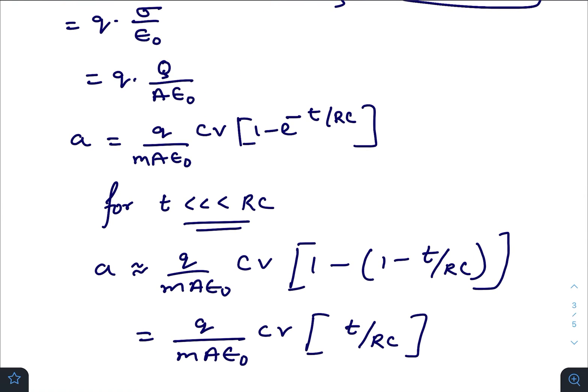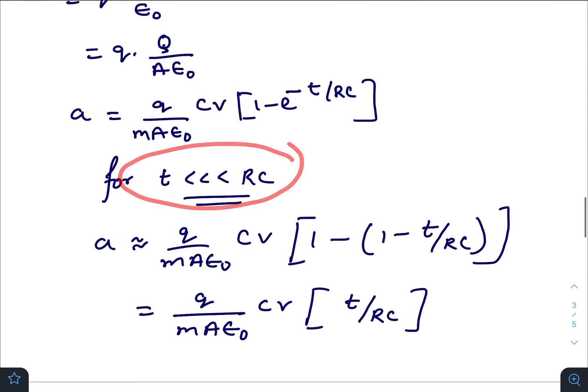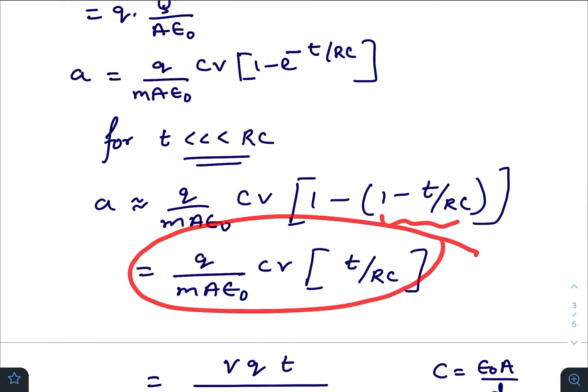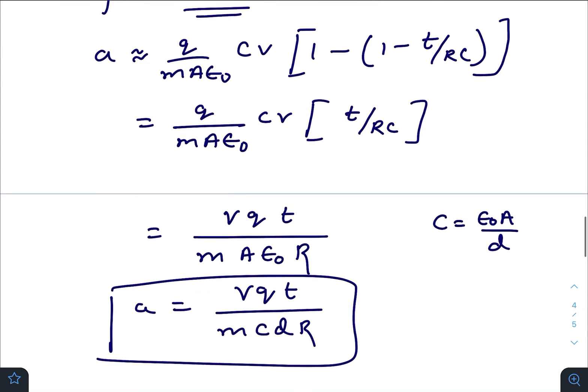In the question they mentioned that the time spent by the particle is very much less than the time constant, so T is very much less than RC. Just taking the approximation, we will expand this in Taylor series and neglect the higher order terms. We will just take the first two terms, so it will be 1 minus T by RC.